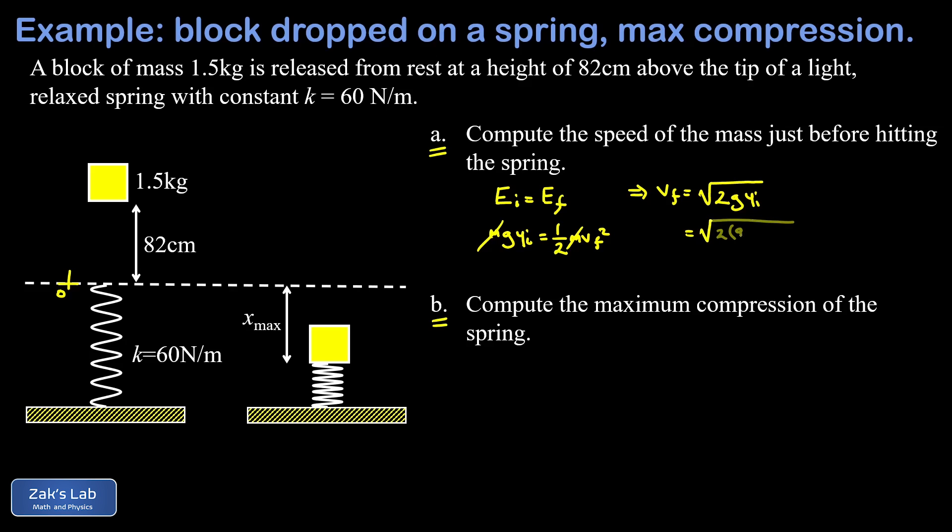So plugging in the numbers, that's 2 times 9.8 times my initial height of 82 centimeters. I have to express that in meters, so 0.82, and when I run the numbers on this to three significant digits I get 4.01 meters per second.